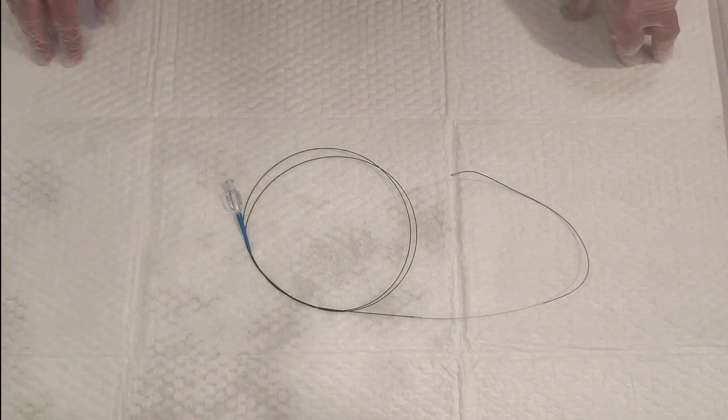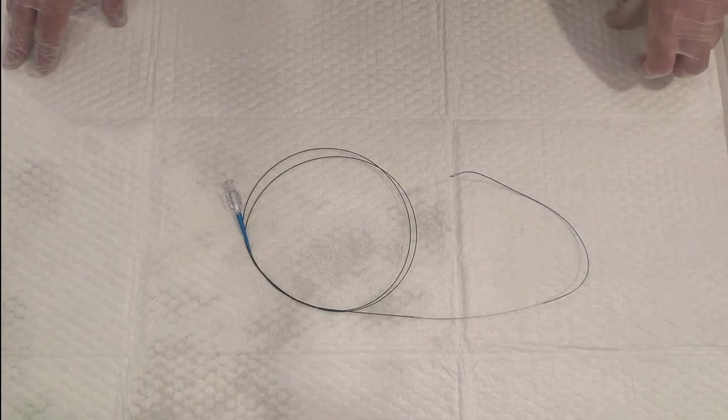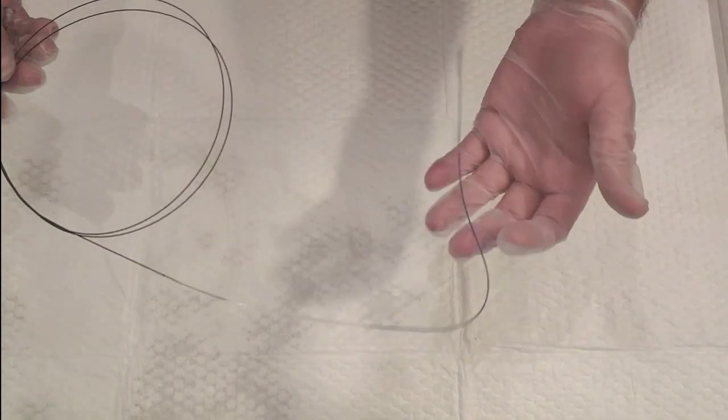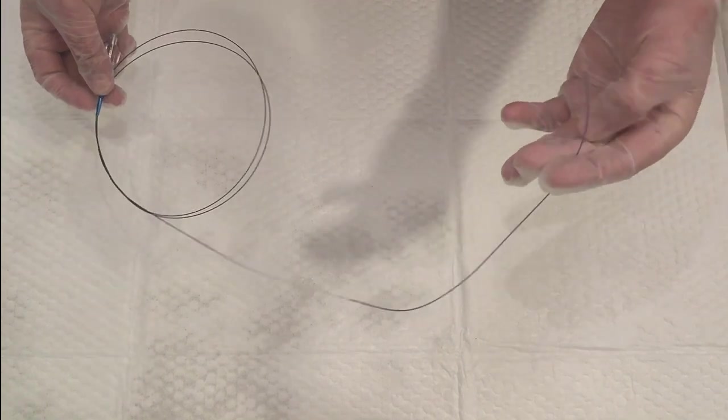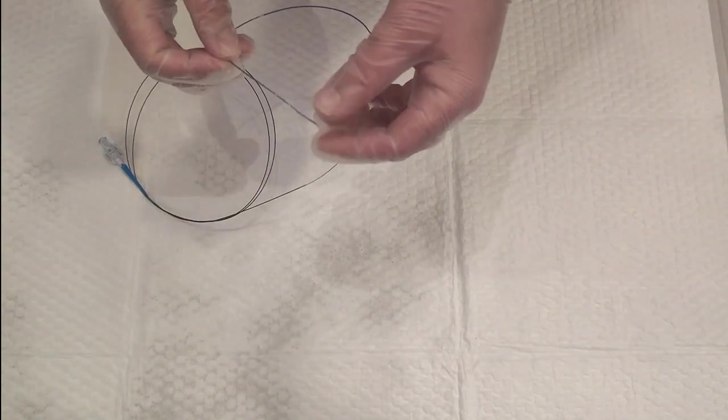Welcome back to my YouTube channel. In today's video we will talk about balloons - what is a balloon and how many types of balloons we have. As you can see, this is a balloon catheter in front of you. A balloon is a device which is used to dilate any part of the vessel.